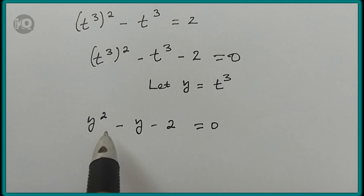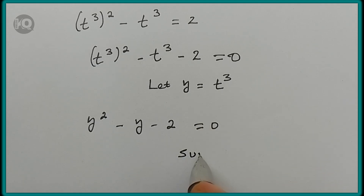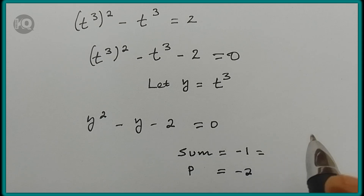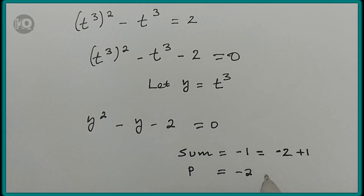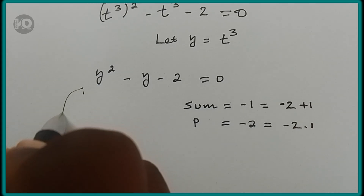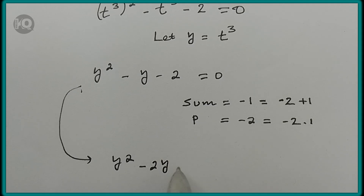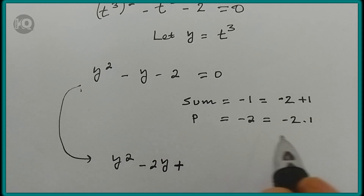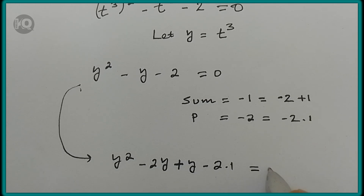As you can see, this is a quadratic equation. We need to find two numbers whose sum is minus 1 and whose product is minus 2. The numbers are minus 2 and 1, since minus 2 plus 1 equals minus 1 and minus 2 times 1 equals minus 2. So the equation becomes y squared minus 2y plus 1y minus 2, which equals 0.